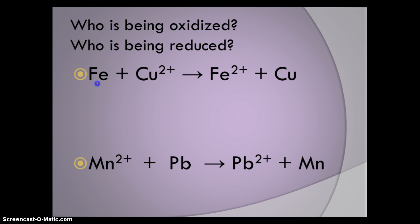To summarize again, iron became plus 2, meaning it lost electrons. When things lose electrons, they are oxidized. Copper went from plus 2 and gained two electrons. When you gain electrons, that's being reduced.